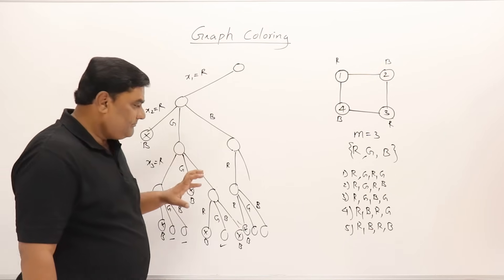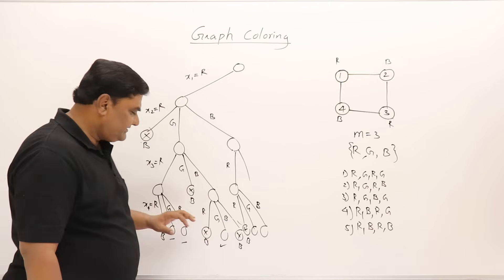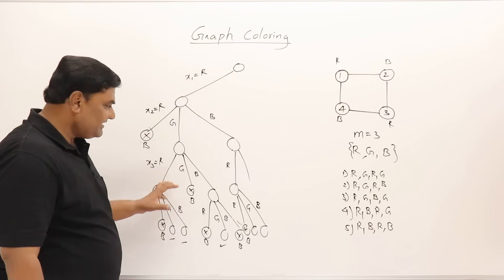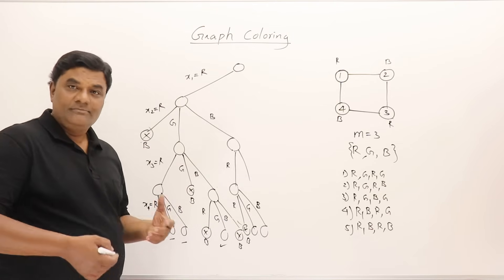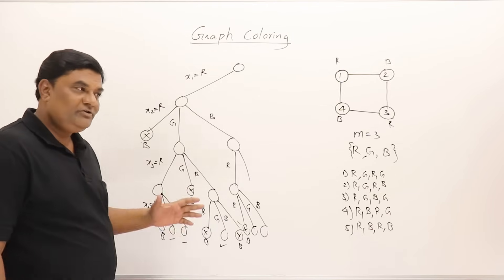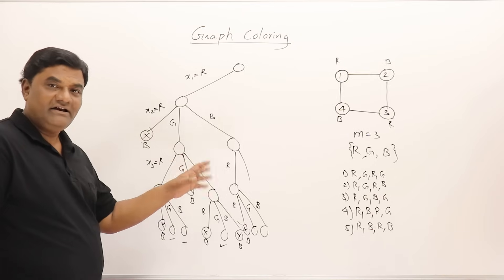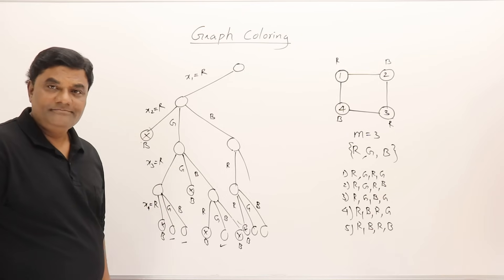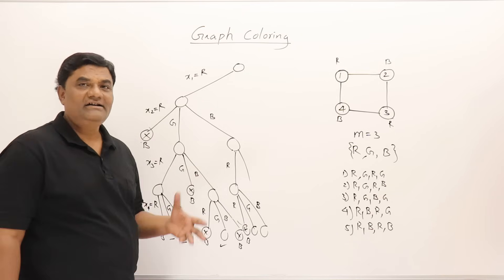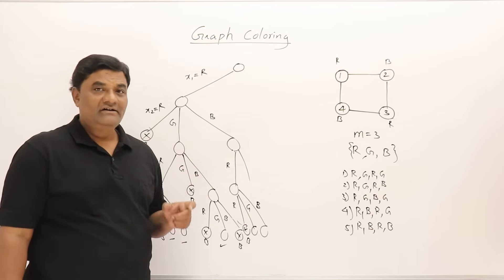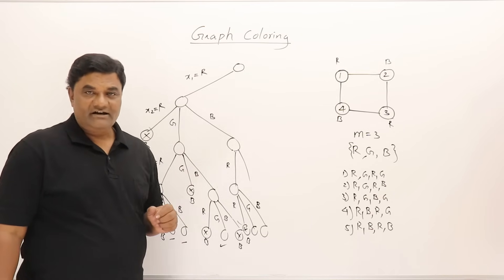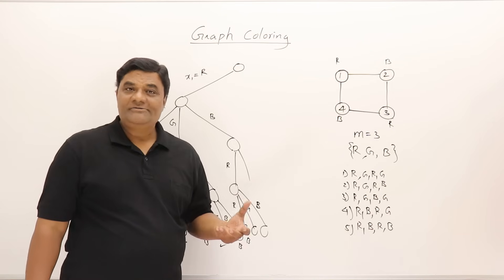By applying the bounding function, many nodes are killed and never explored. Even so, the time complexity is at most O(3^n), since at most c^n nodes can be generated. The backtracking approach significantly reduces the search space compared to brute force.